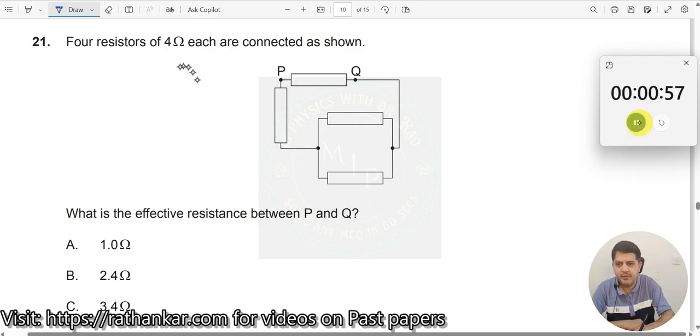Question number 21. Four resistors of 4 ohm each are connected as shown. What is the effective resistance between P and Q?